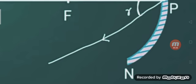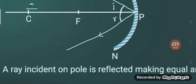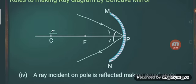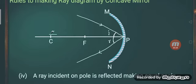The angle of the incident ray and the angle of the reflected ray will be equal. That is, the angle of incidence is equal to the angle of reflection.